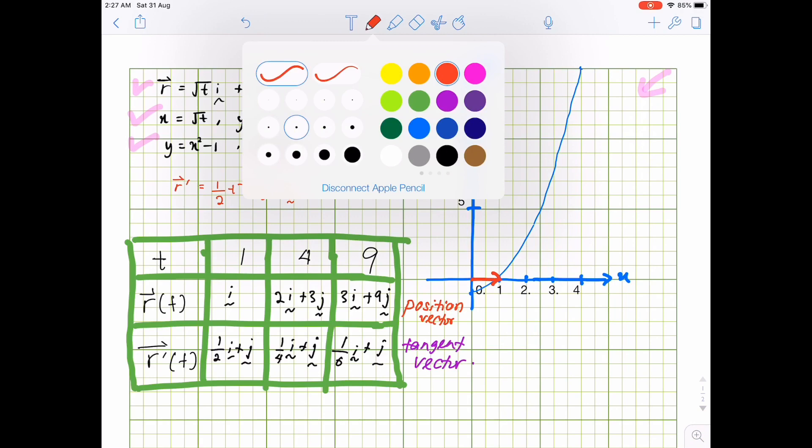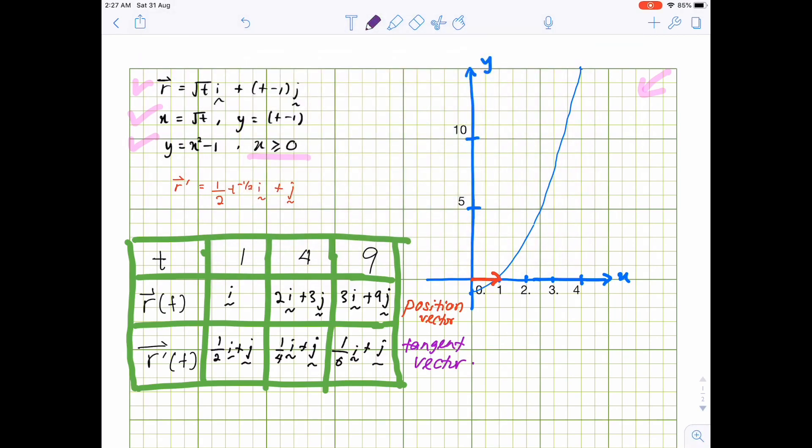Somewhere here. So now purple color to represent the tangent vector. We have half i plus j. Half i plus j. Somewhere here.